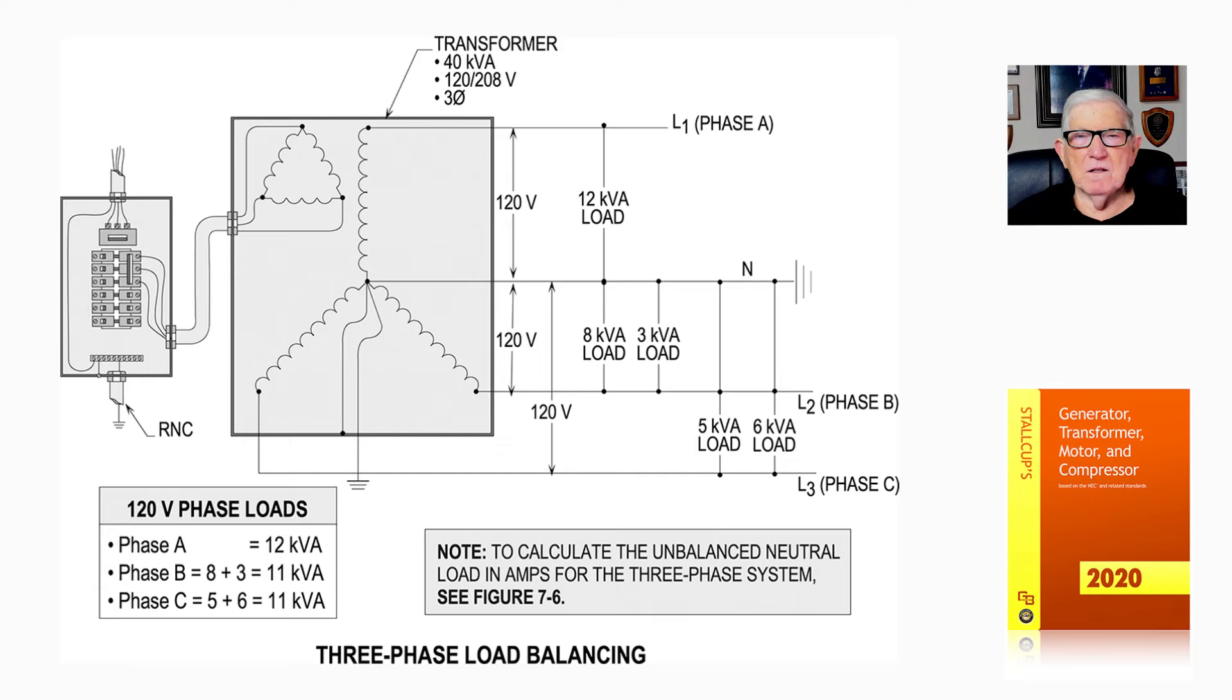So in the illustration, you notice this is a 40 kVA transformer, 120/208 volt three-phase four-wire. Notice you have 12 kVA from A to the neutral, and then from B to the neutral you have 8 and 3 kVA, and then from L3 to the neutral you have 5 kVA and 6 kVA.